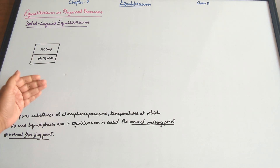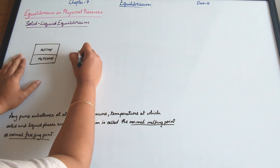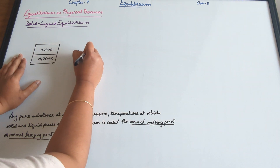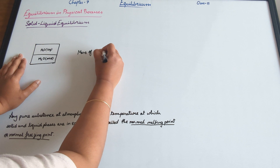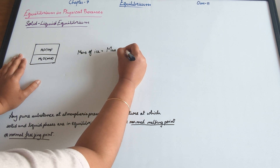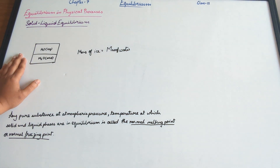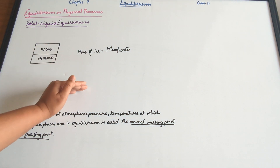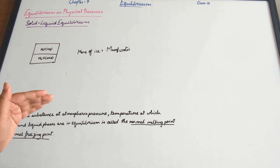As long as there is no change in temperature, it is observed that the mass of solid — of ice — equals the mass of water, which means that both these states are in equilibrium with each other.